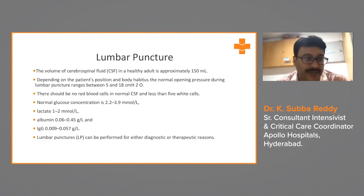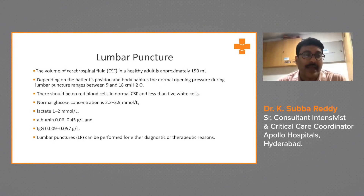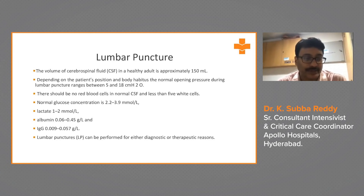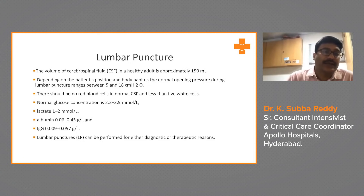The normal glucose concentration is 2.2 to 3.9 millimoles per liter. Lactate is 1 to 2 millimoles per liter. Albumin is 0.06 to 0.45 grams per liter. IgG concentrations — we generally don't measure those during lumbar puncture.